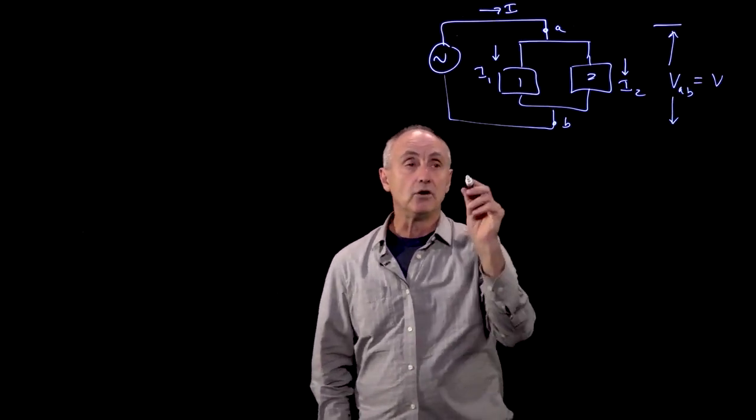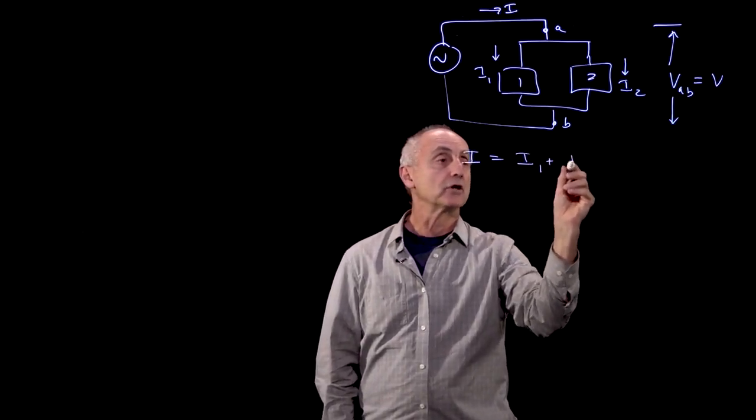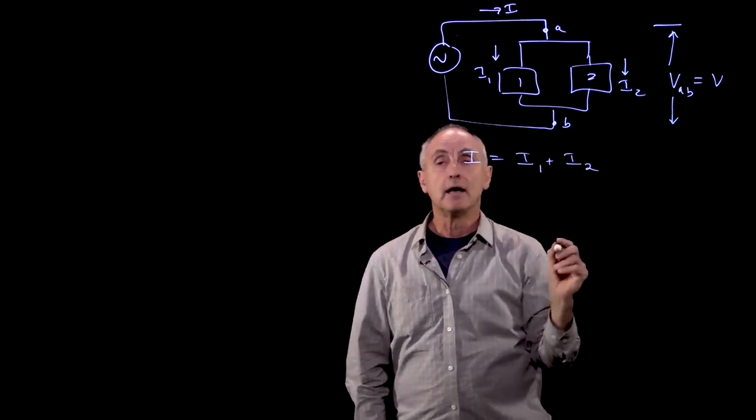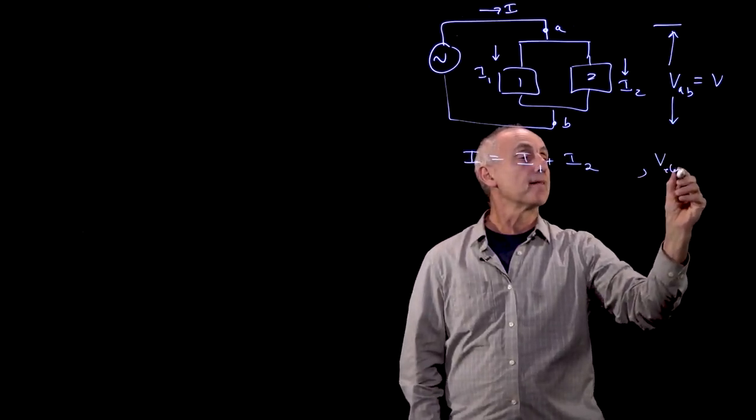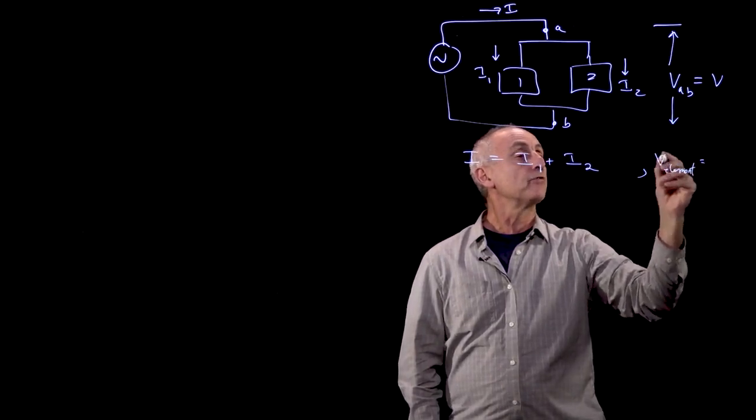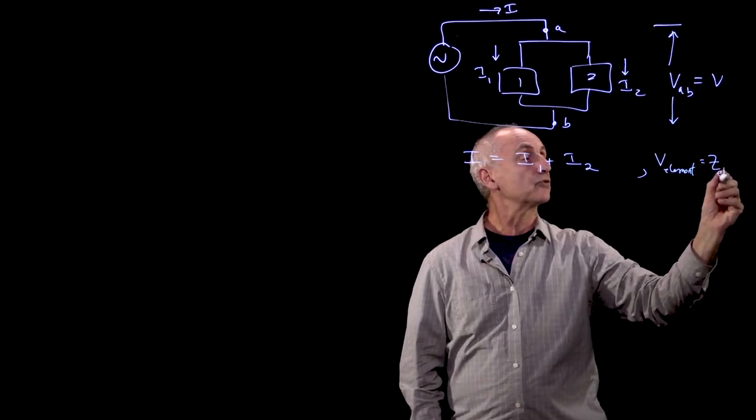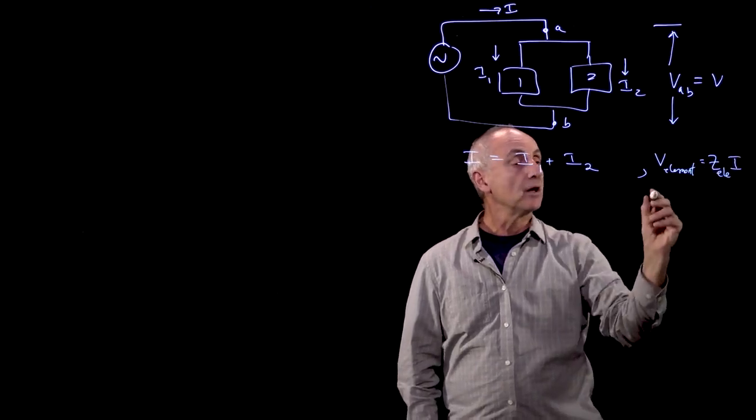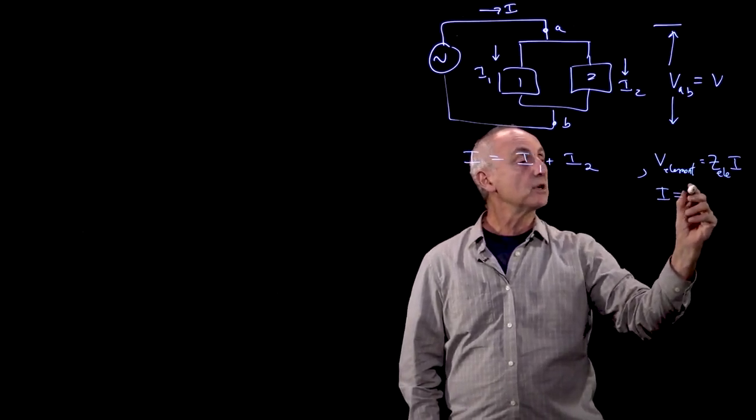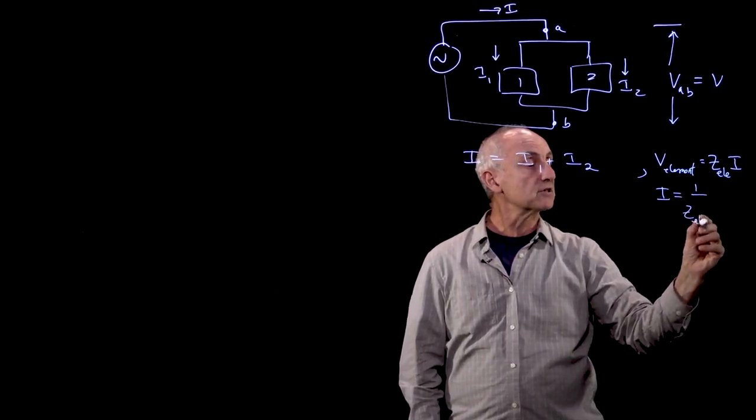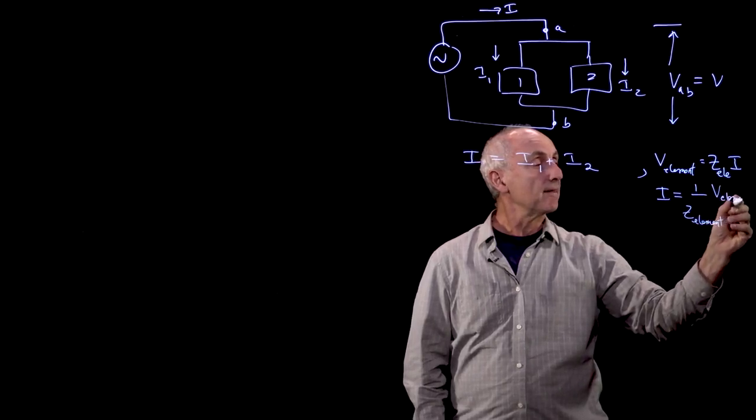What we know here is that the current adds. That's current conservation. Recall that we have the relationship for any element that the voltage across that element is equal to the impedance times current. But we could flip this relationship around and write that current is equal to one over the impedance times the voltage across that element.